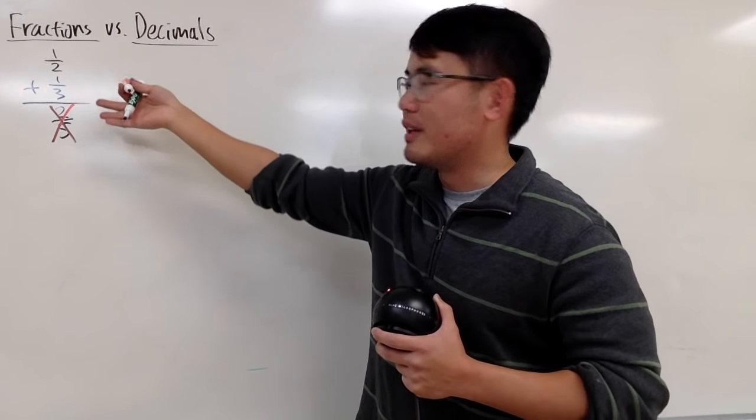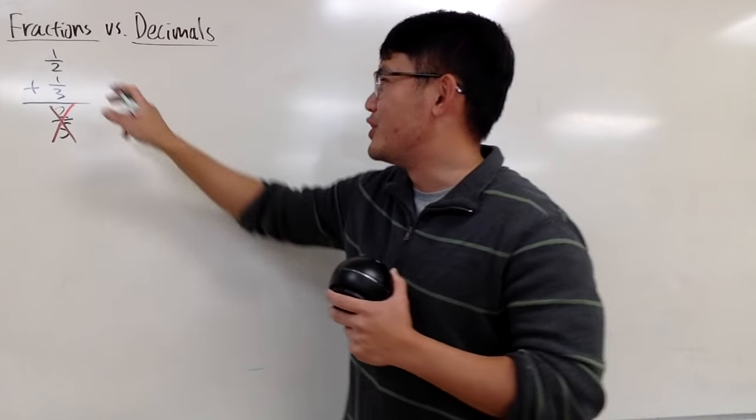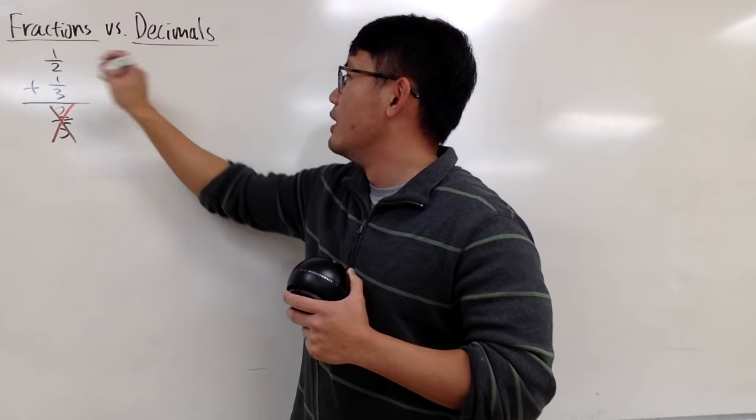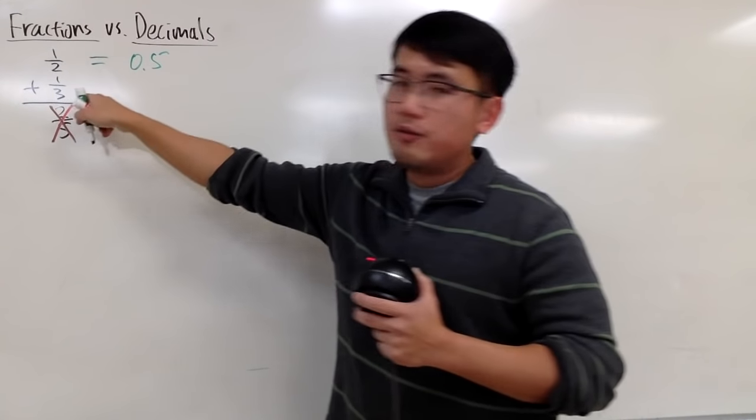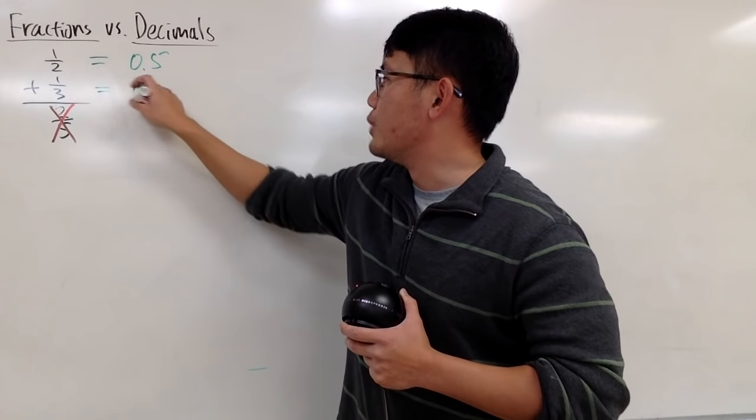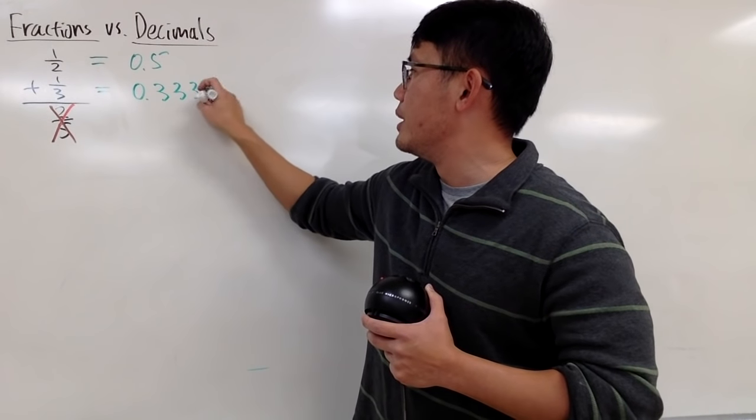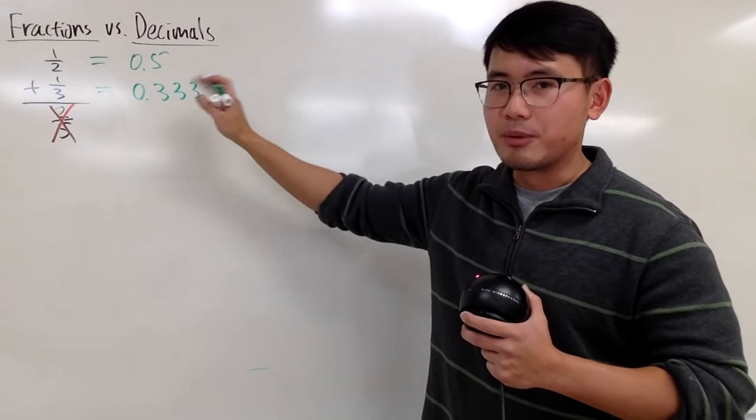Decimals came much later than fractions, right? And if you are willing to take the time to change 1 half to decimal, and of course, we all know this right here is just 0.5. And for 1 third, it's not so easy. Well, because you actually get 0.333. It keeps on going forever. So this right here, the decimal version is not so easy.